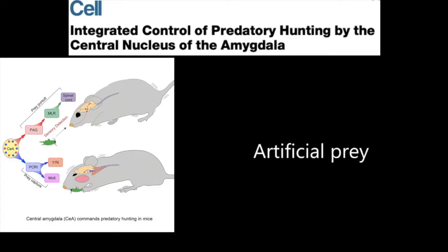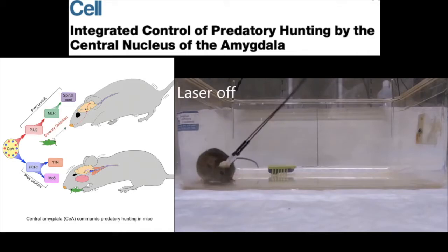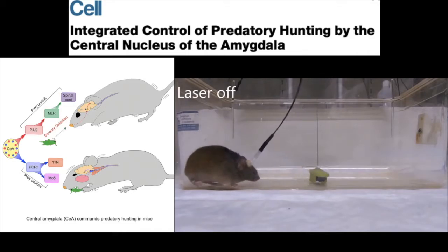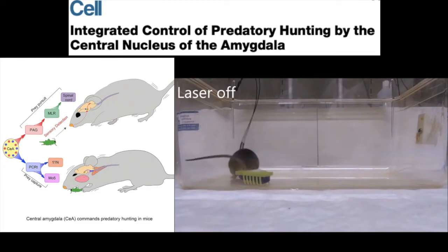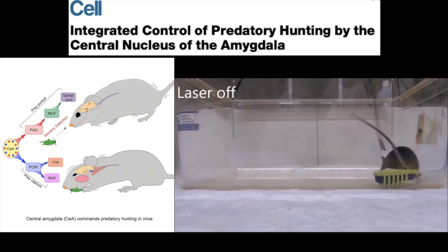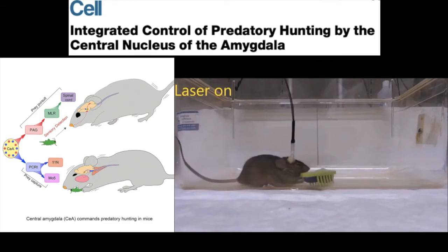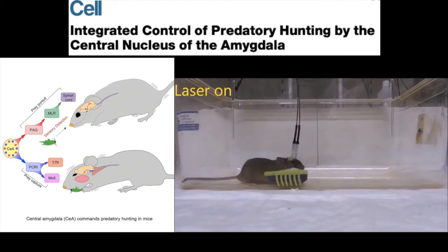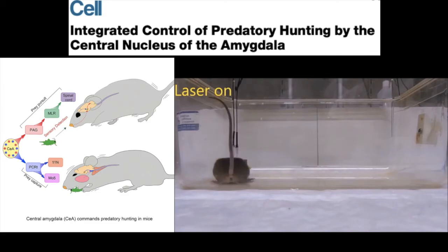In another paper, the authors sought to explore the role of the central amygdala in predatory behaviors. They expressed channelrhodopsin in the central amygdala of a mouse and placed it in a box with a small moving toy to simulate prey. When the light is off, the mouse ignores the toy and even moves to avoid it. However, when the light turns on, the mouse immediately begins to aggressively bite the toy, confirming the role of this brain area in predatory behavior.